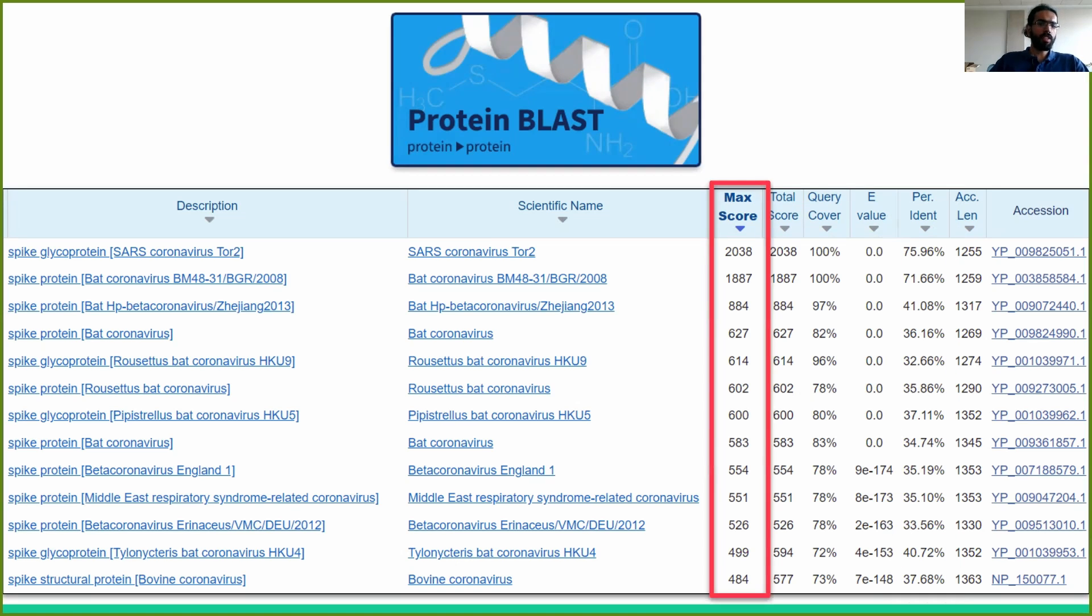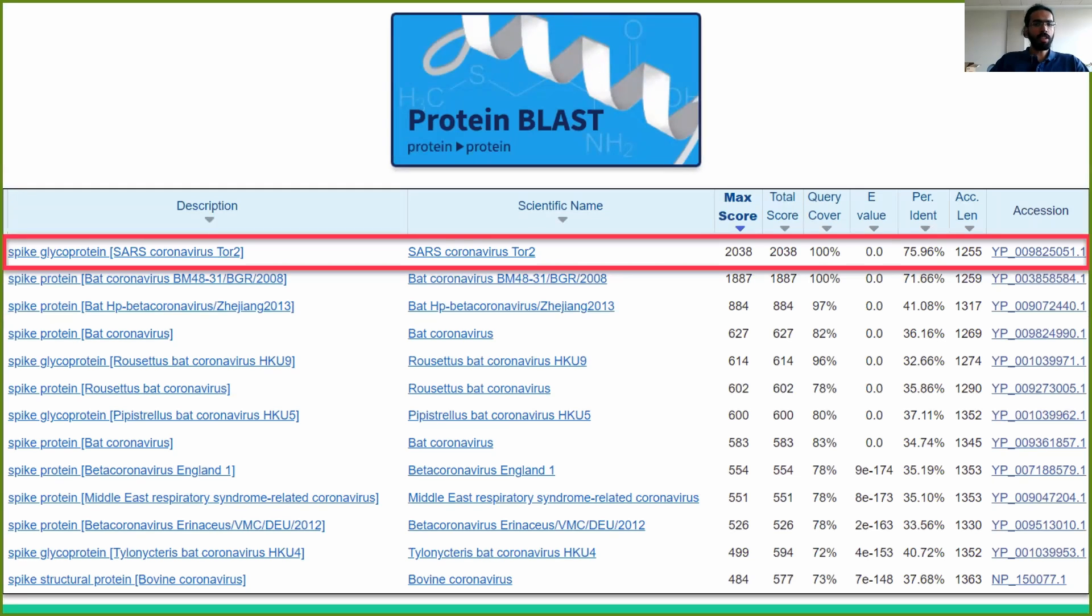At the time of recording this video, the entry with the largest max score is named spike glycoprotein SARS-CoV-2, which has a max score of 2038 and a percent identity of 75.96%. Indeed, SARS-CoV-2 is not only a relative of SARS-CoV-1, but it is also a member of a family of different coronaviruses which live in mammals. A subset of these coronaviruses live in humans, although this does not necessarily make them more likely to be closely related to SARS-CoV-2.